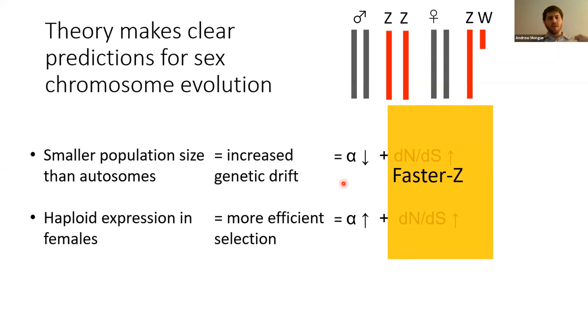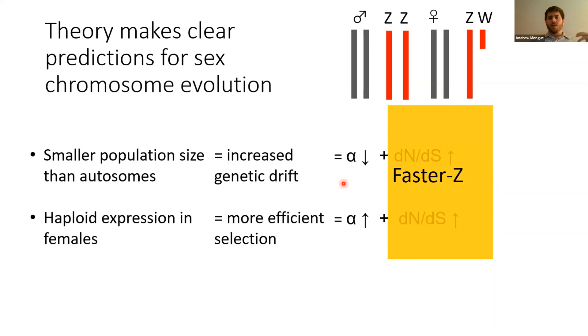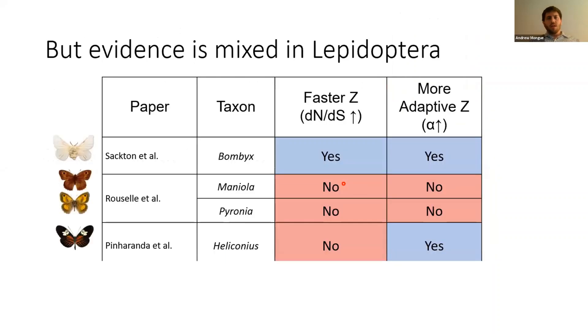Population genetics tells us this should have opposing effects: smaller effective population size causes increased genetic drift, but haploid expression and therefore haploid selection is much more efficient than diploid selection. Depending on which of these two forces is more powerful, the amount of adaptive evolution alpha is either decreased or increased on the Z chromosome relative to the autosomes. In either case, theory predicts that the rate of molecular change — dN/dS — should be higher for the Z chromosome than the autosomes, known as the faster-Z effect.